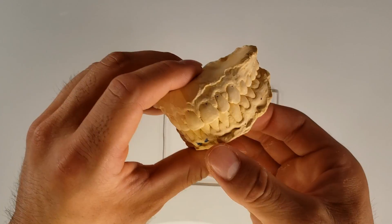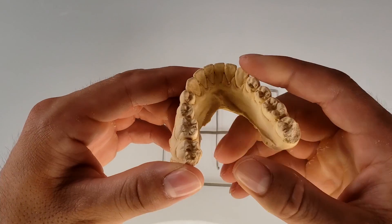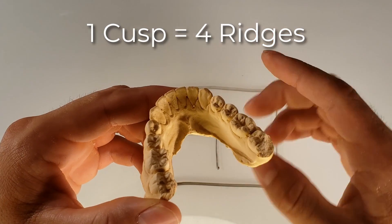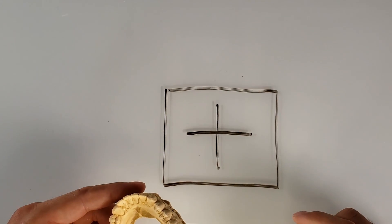So the cuspid only has one cusp. Let's look at it from your point of view. This is the mandibular canine. It only has one cusp. Every cusp has four ridges. So if we look at it from the overhead view, we can look at it like this.